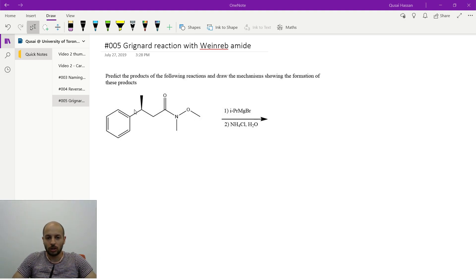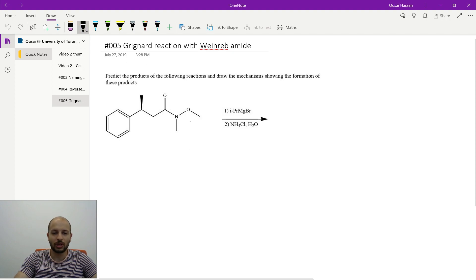So today we're going to talk about a mechanism slash kind of predict the product question. So the question is, predict the products of the following reactions, it's only one reaction, and draw the mechanisms showing the formation of these products. So what we're going to do is we're going to step by step try to go through the mechanism and predict the products simultaneously.